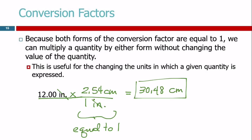Conversions within the metric system, like millimeters to meters, are exact. Conversions within the English system, like inches to feet, are exact. But with very few exceptions, if you go back and forth — like kilometers to miles — that's not exact. The number of significant figures is going to depend on where you got the conversion factor from.